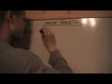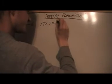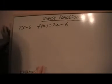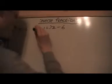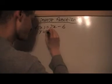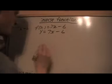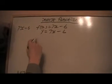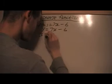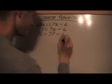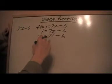So f of x equals 7x minus 6. And this is the method for it. We'll change f of x to y, so now I've got y equals 7x minus 6. Then we'll swap the x's and y's, so now I've got x equals 7y minus 6. And then we'll solve for y.